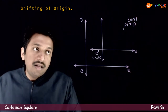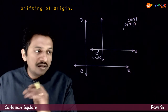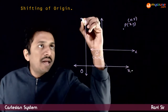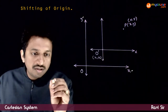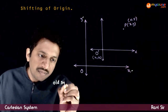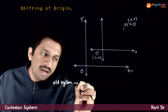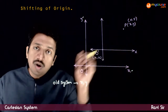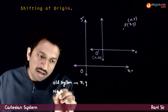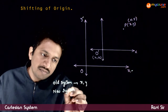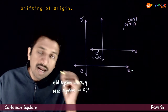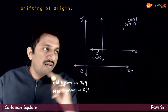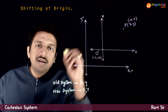The first operation we're going to look at is shifting of origin. The original coordinate system is denoted by small x, small y — this is a standard convention. So the old system is denoted by small x and small y, and the old coordinates of a point are also denoted by small x, small y. The coordinates according to the new system are denoted by capital X, capital Y. So the old axis is small x, small y and the new axis is capital X, capital Y.